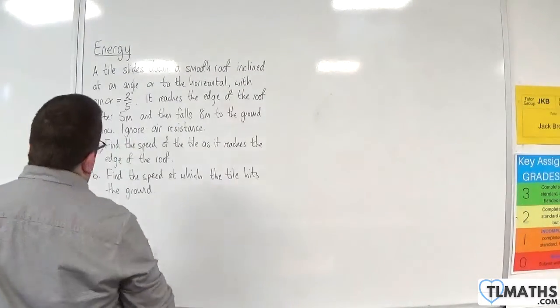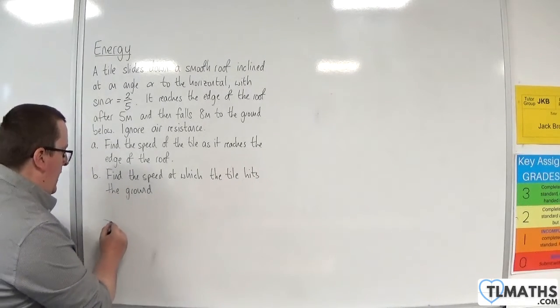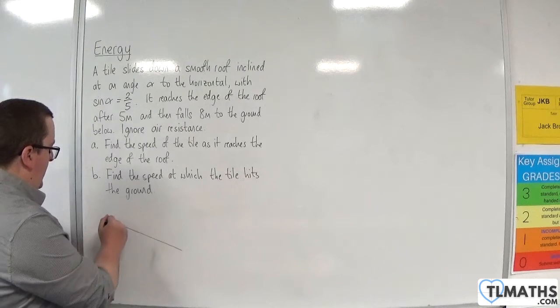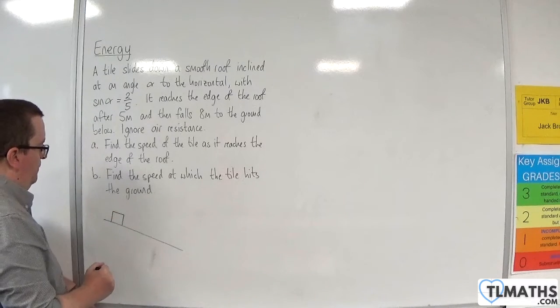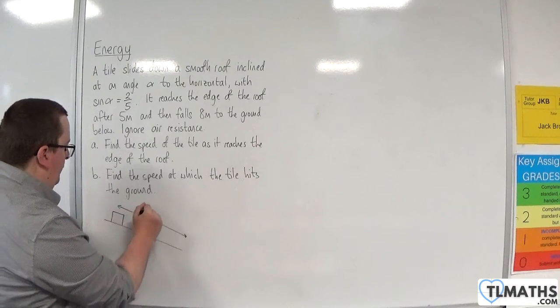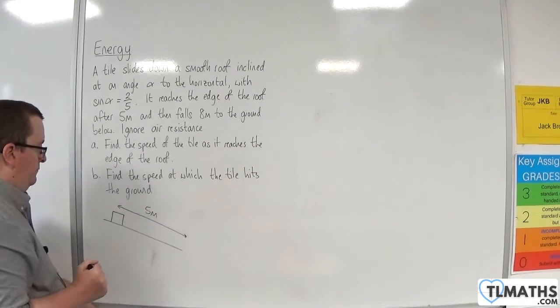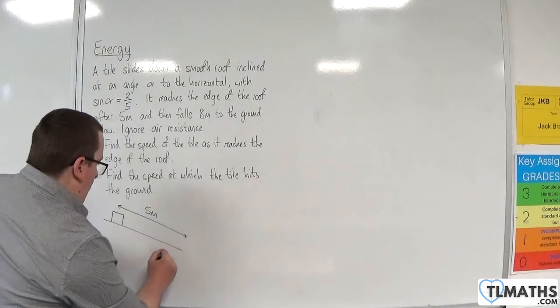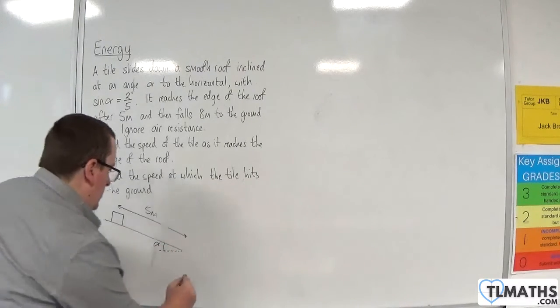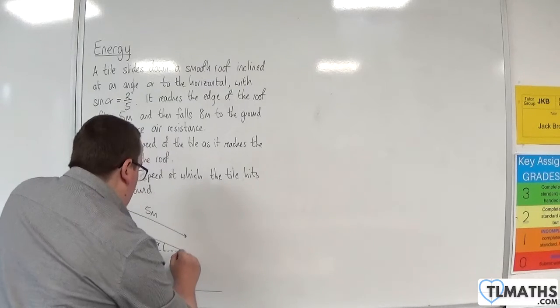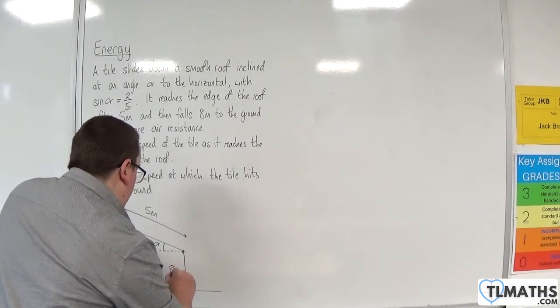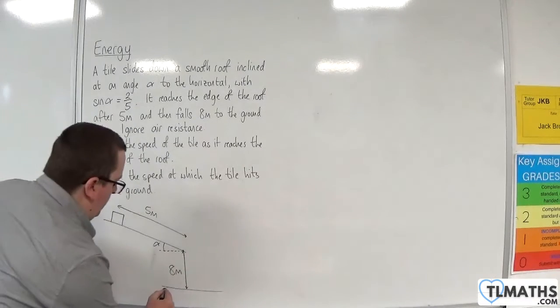Let's draw a diagram so we can visualise what's going on. So here is my roof, and here is the tile on the roof. We know that this distance here is five metres, and this angle is alpha. And once it's got to the edge of the roof, it's going to fall eight metres. So here is the ground.